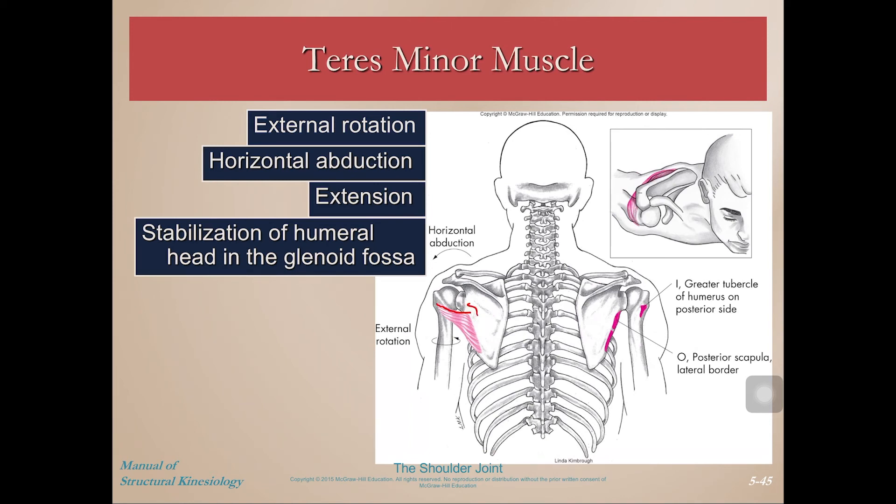Finally, teres minor is below infraspinatus. Its line of pull tells us it also does external rotation, along with horizontal abduction, extension, and stabilization. So there you have it — the muscles of the shoulder joint. This is an introduction to these muscles; the best way to learn them is to palpate them on yourself, feel these movements, maybe use an elastic band for external and internal rotations, and also palpate them on someone else, asking them to contract and relax through joint movements — that will help you understand them not just conceptually, but also kinesthetically.